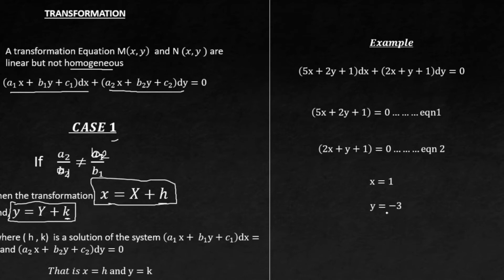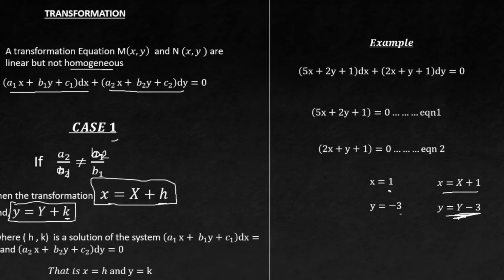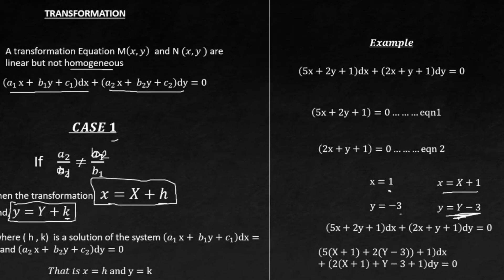The s answer becomes h and the y answer becomes k. So h = 1 and k = −3. You now insert these into the substitution equations: small s = big S + h and small y = big Y + k. After that, substitute into the original equation.